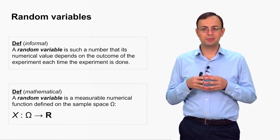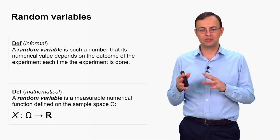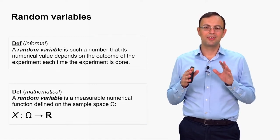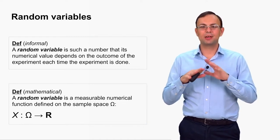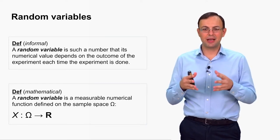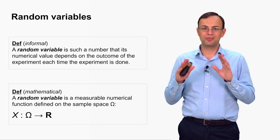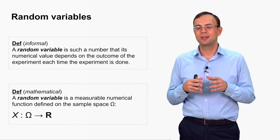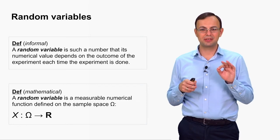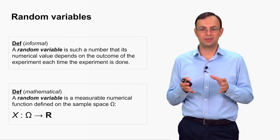The term 'measurable' comes from functional analysis — never mind. All functions we meet in real life, all functions describing correspondences between sets encountered in real life, are measurable. So this additional property — not simply a numerical function, but a measurable numerical function — is not so very important practically.